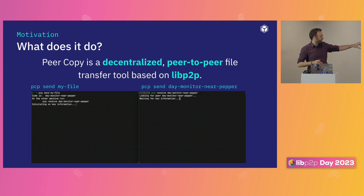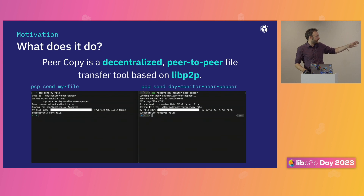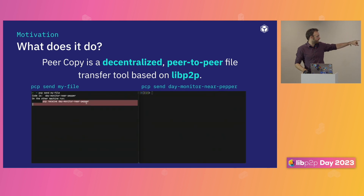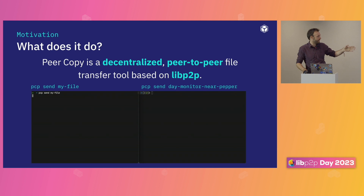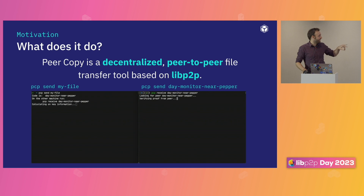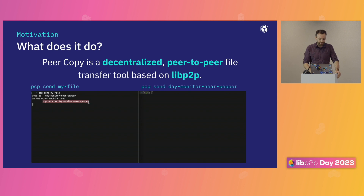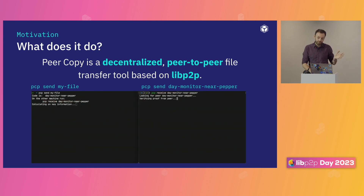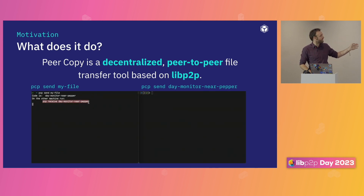You can see it here. We have two machines. The left one types into the command line PCP send and then the name of the file. PCP spits out four unique words. The receiving side takes these four words and types into the command line PCP receive. Both peers automatically and magically find each other, connect, the receiving peer confirms the file transfer, and then the sending peer sends the file to the receiving peer.